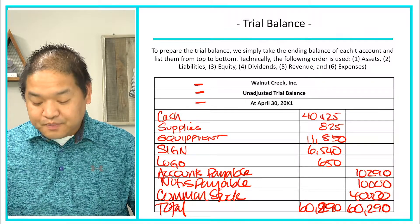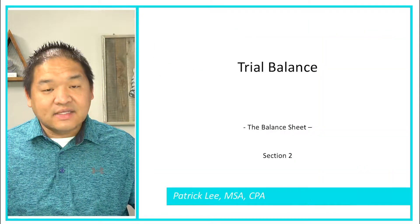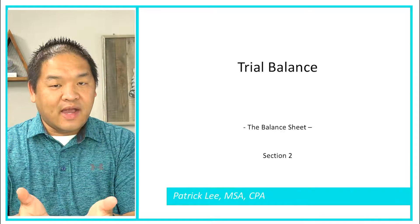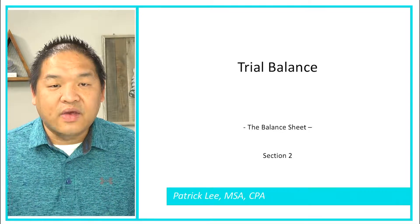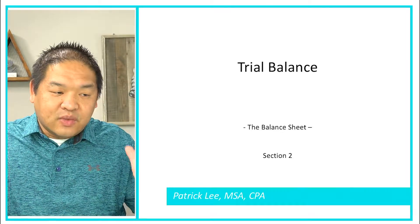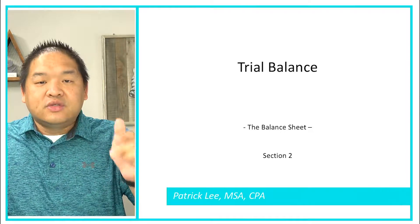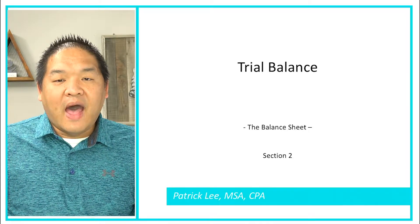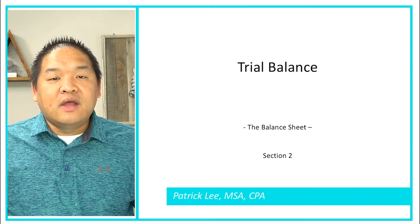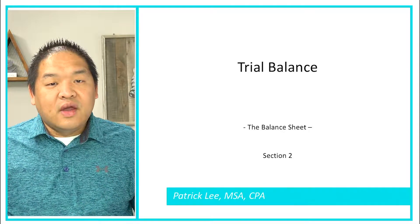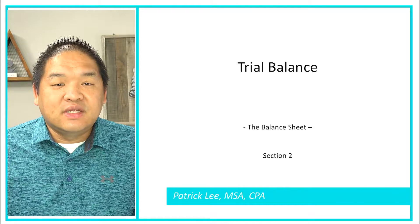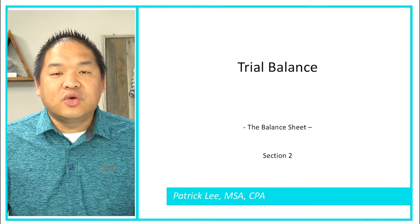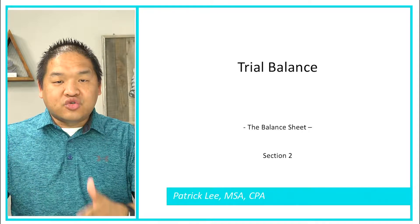The trial balance is simply all of the accounts and their ending balances — no other calculations. It's a copy job: from the general journal to the ledger, to the T-accounts, and then to here. From the trial balance we can then start the financial statements — including the balance sheet, statement of cash flows, income statement, and statement of retained earnings.